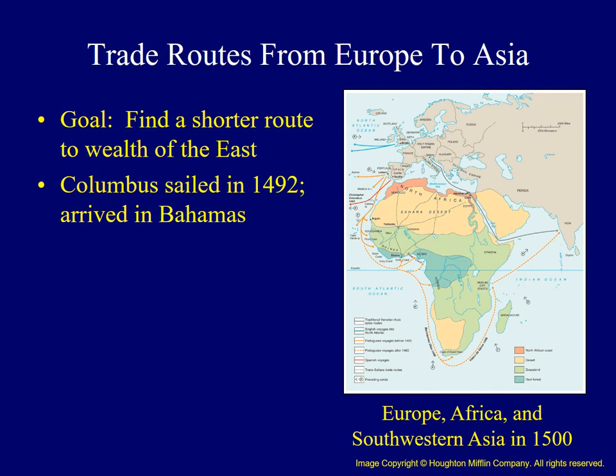One such explorer was Christopher Columbus from Genoa, Italy. By the late 1400s, he was a skilled navigator who became obsessed with finding a shortcut to the east. In 1492, he convinced the Spanish monarchs Isabella and Ferdinand to finance a mission of discovery. He arrived in the Bahamas in October of 1492, and he believed he had found a shorter route to the Indies. Therefore, he named the people he came into contact with Indians.